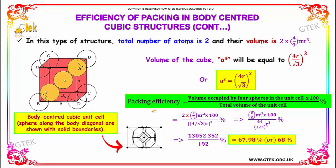The packing efficiency is given as the volume occupied by spheres in the unit cell divided by the total volume of the unit cell, multiplied by 100. This gives 2 × (4/3)πR³ × 100 divided by (4R/√3)³. Cancelling R³ terms yields 13052.352 / 192 percent.